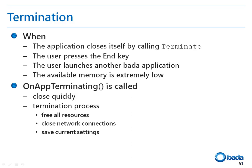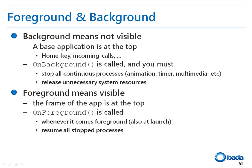In these cases, the OnAppTerminating virtual function of the application class is called. This function can also be found in the application name .cpp file. You have to implement the code to properly terminate the application in this function. If the user presses the Home button or a call arrives when a BADA application is running, the base application should have top priority and the BADA application changes to run in the background — meaning the screen is not displayed. In this case, the system calls the OnBackground function of the application class.